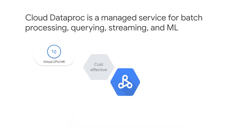Let's take a look at the key features of Cloud Dataproc. Cloud Dataproc is priced at $0.01 per virtual CPU per cluster per hour, on top of any other GCP resources that you use. In addition, Cloud Dataproc clusters can include preemptible instances that have lower compute prices. You use and pay for things only when you need them and not when you don't.